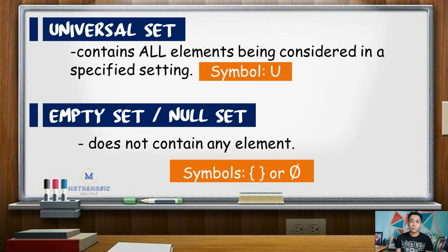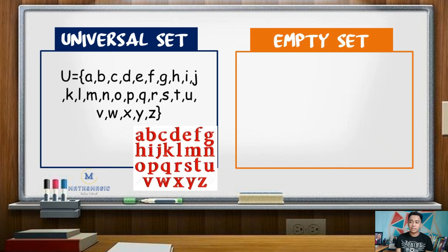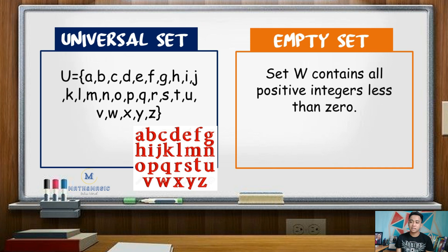So as an example, say set U or the universal set contains all the lowercase letters in the English alphabet. For null set or empty set, say set W contains all positive integers less than 0. Since every positive integer is greater than 0, set W is an example of an infinite set, or there will be no element for this set.